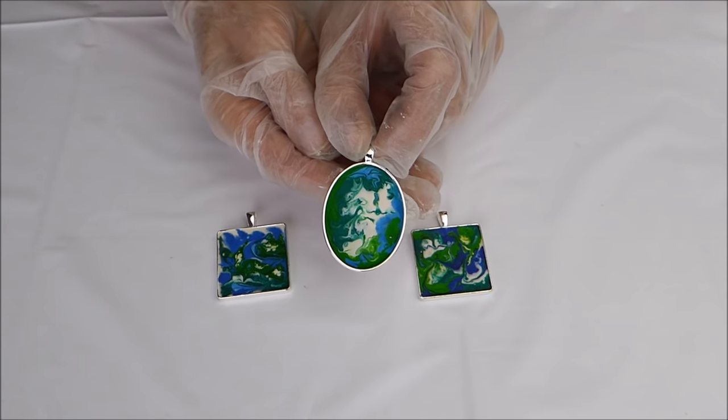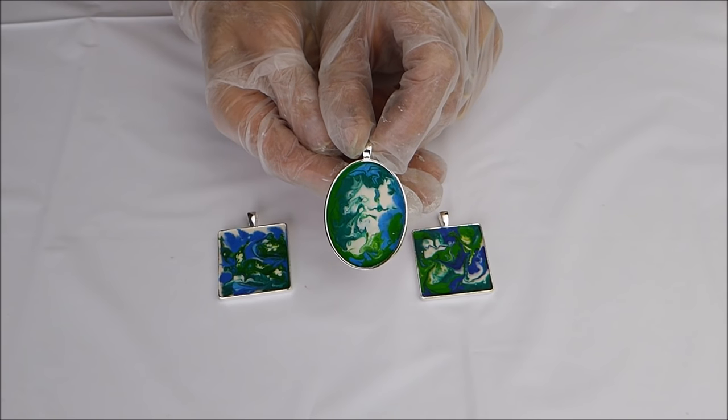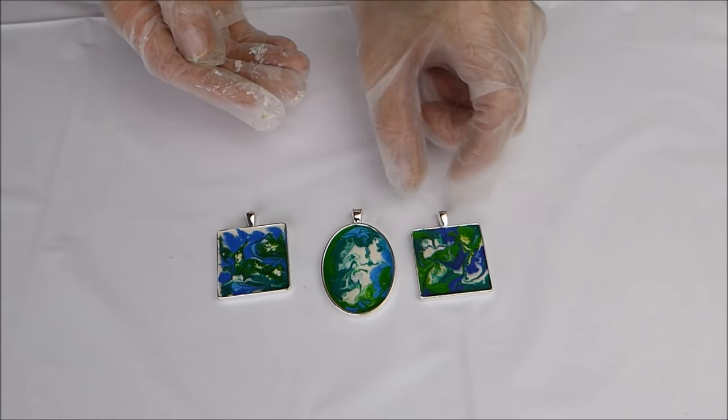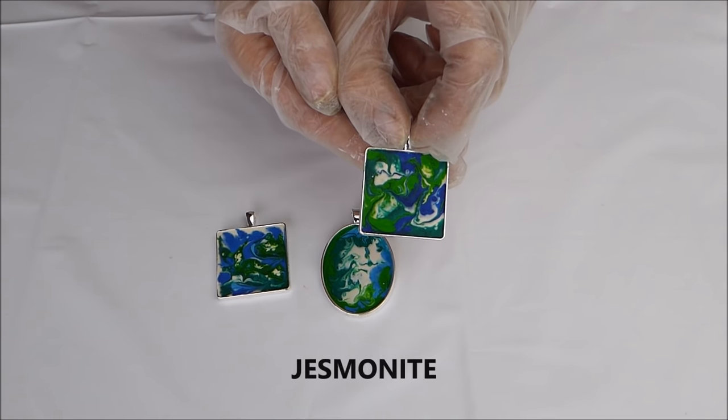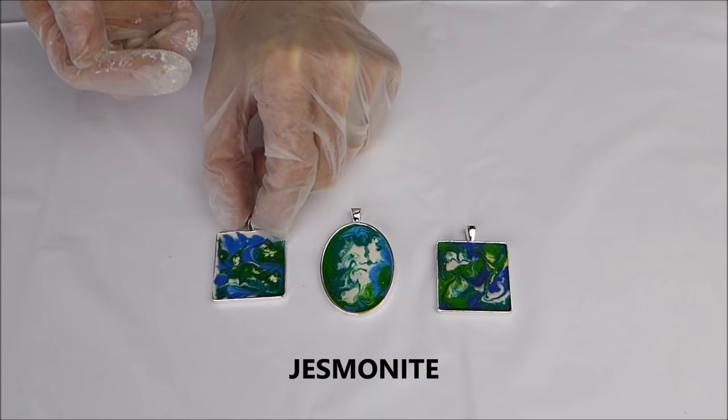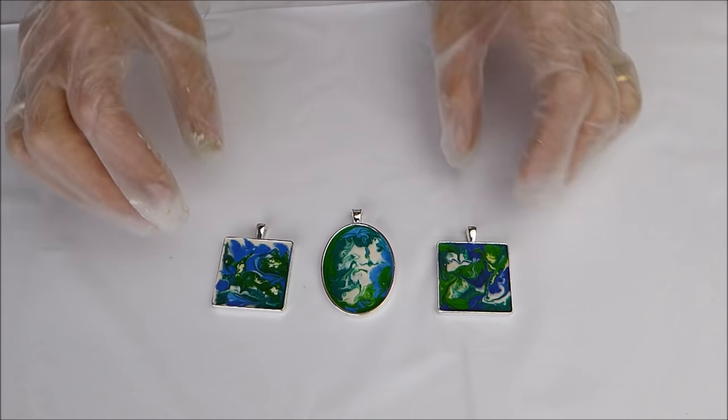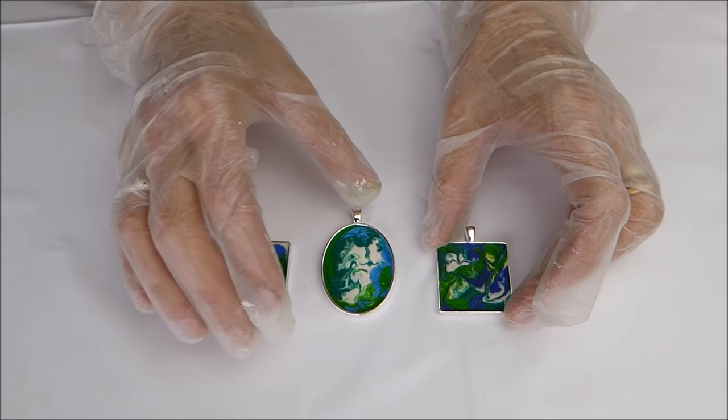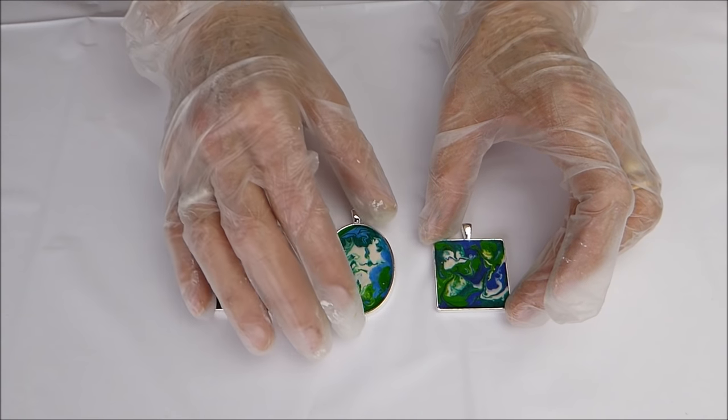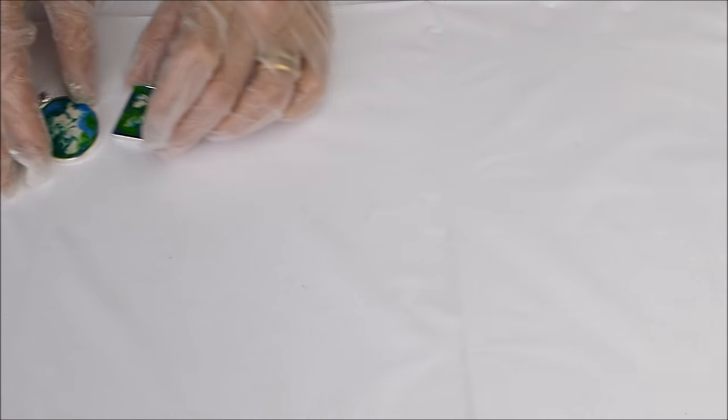Today I'm going to show you how to make these fun abstract pendants using a material called jesmonite, which is an acrylic polymer mineral resin system. It sounds complicated but it isn't and it's really easy to use, really non-toxic, not at all dangerous. So let's get started.